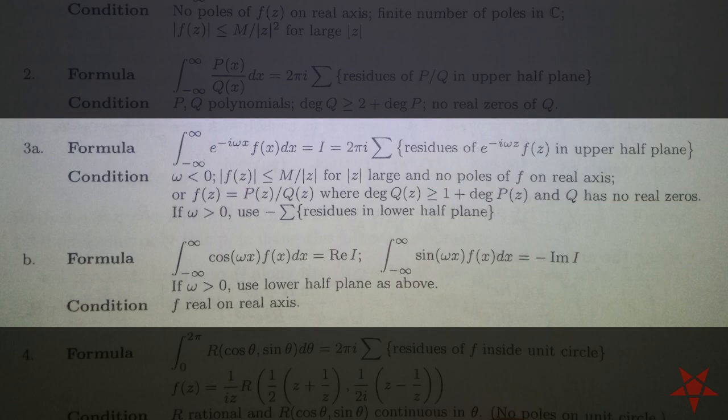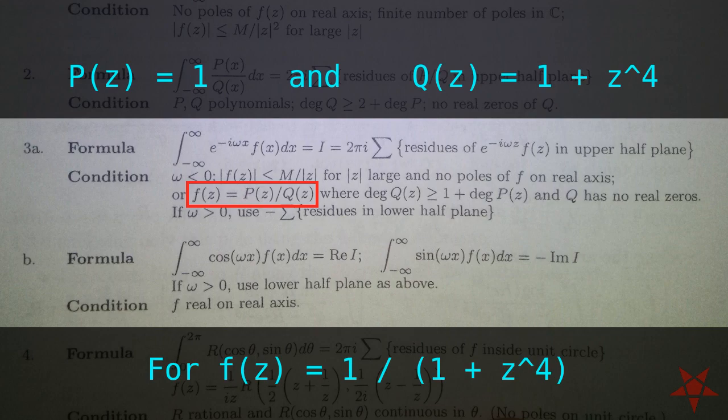In our case, f of z can be described as the quotient of two polynomials, P of z and Q of z. P of z is equal to 1, and Q of z is 1 plus z to the 4th. The degrees of P and Q meet the requirement that Q of z, a 4th degree polynomial, have a degree equal to or greater than that of P of z, which in our case is a 0th degree polynomial.